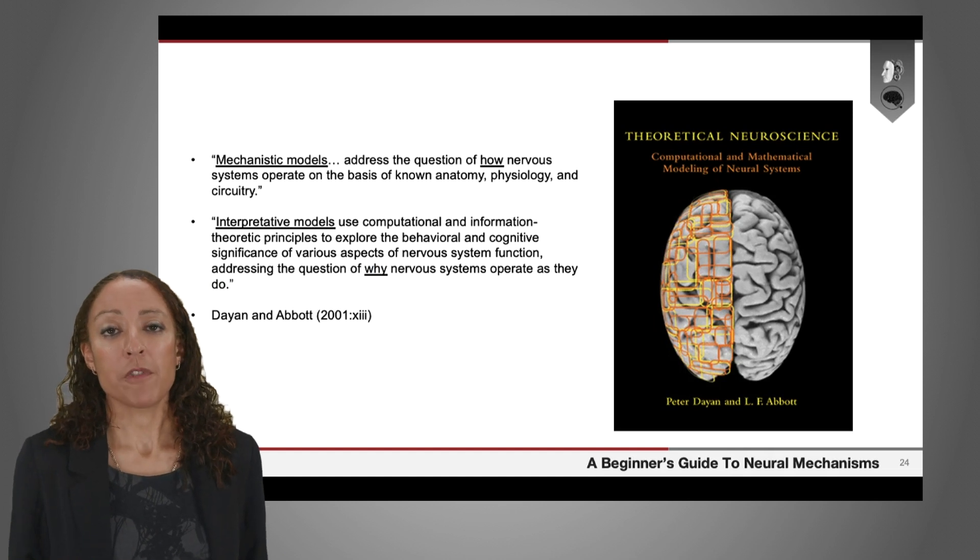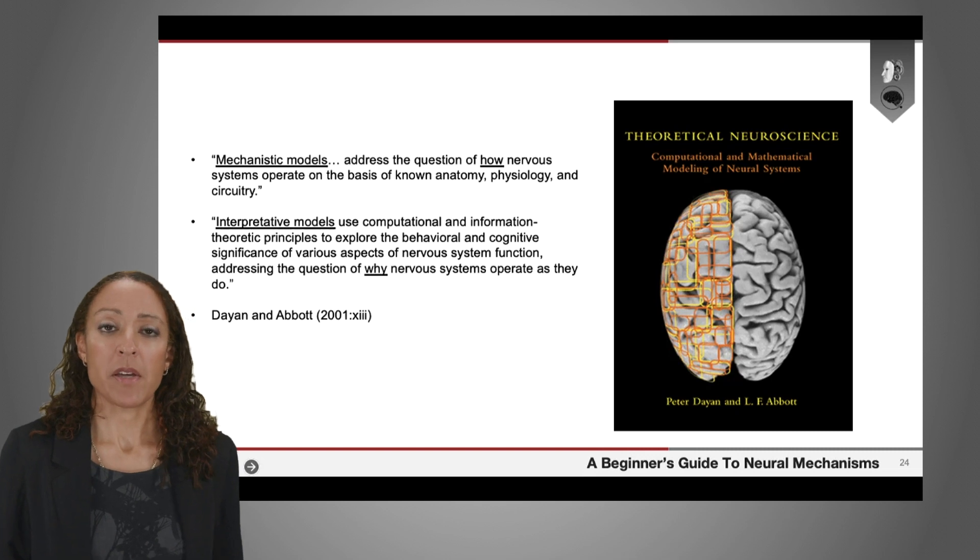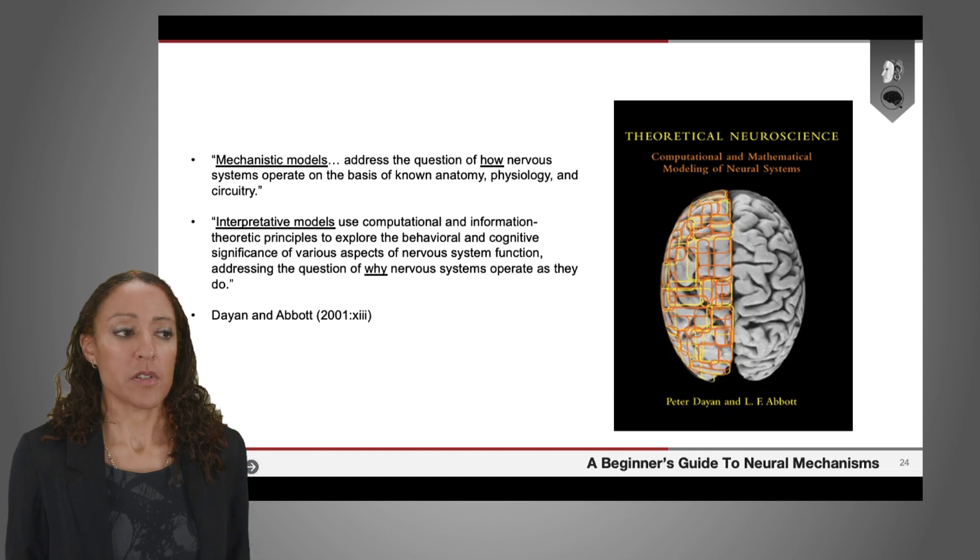So this is an idea that's been very influential. This is a textbook from Dayan and Abbott, talking about different kinds of models in neuroscience. And they draw a contrast between mechanistic models, which describe how things work in neuroscience,